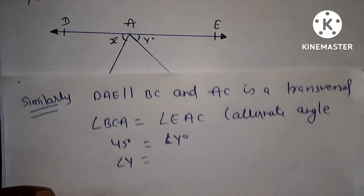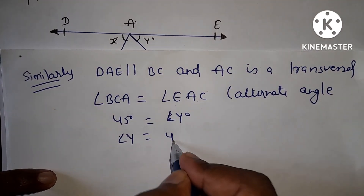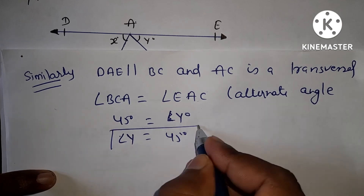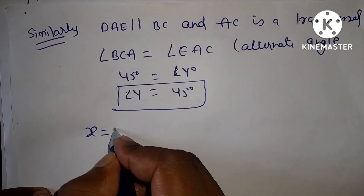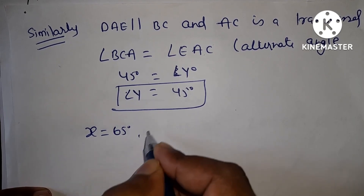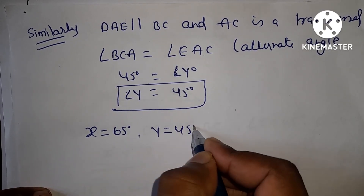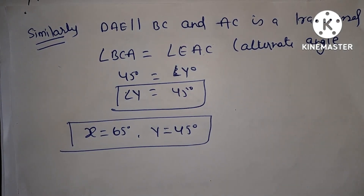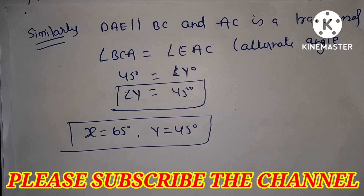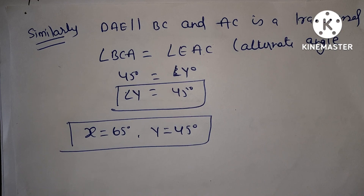Angle Y equal to 45 degree। तो X equal to 65 degree और Y equal to 45 degree — आपने evaluate कर दिया। Please दोस्तों अगर आपको video अच्छा लगा, आपका helpful हो, तो please channel को like and subscribe ज़रूर करें क्योंकि आपका like and subscribe motivate करता है। Thank you friends.